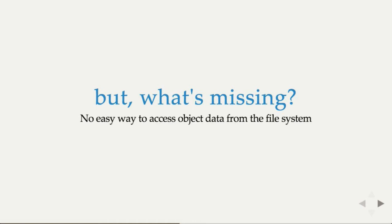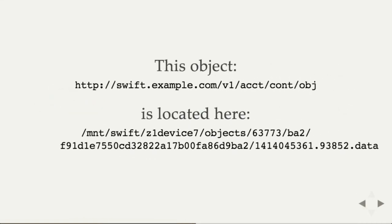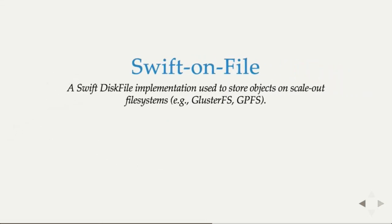So you've done that, but there's still something missing. There's no easy way to access the object data from the file system. For example, the top line is an existing URL to an object through the Swift object API — you've got an account, a container, and an object hierarchy at the end of the URL. But in the file system, it's located at a much more complex directory structure, and the name of the object itself is not even the file name — it's the timestamp when the object was created. So the data is there, but it's very difficult to access.